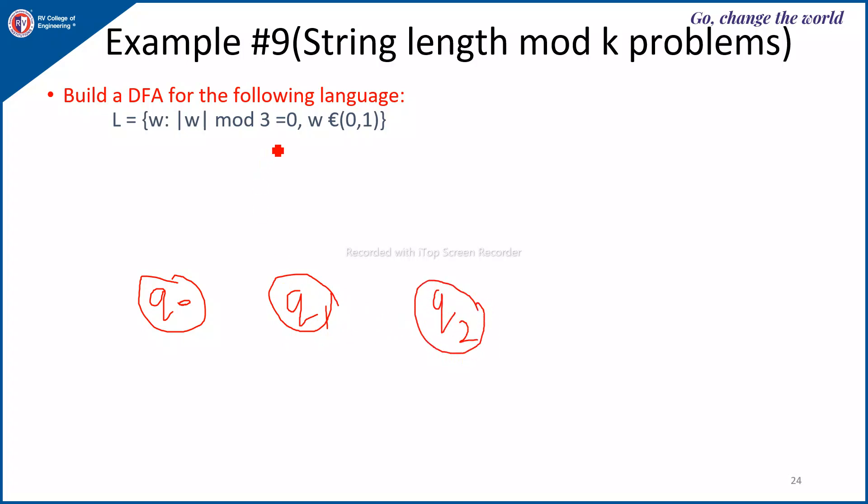Since the remainder has to be 0, Q0 itself is the start state. So initially empty string has length 0, so the empty string is accepted.